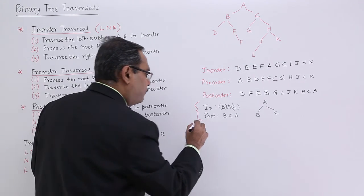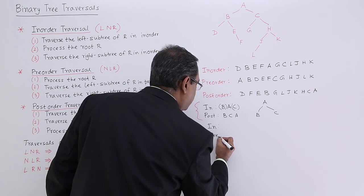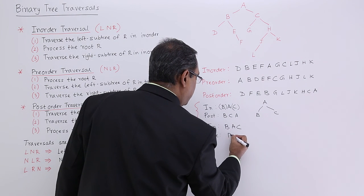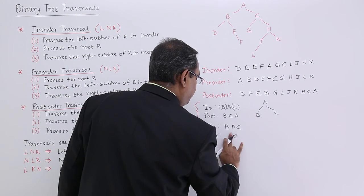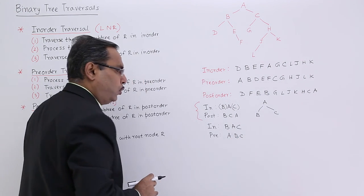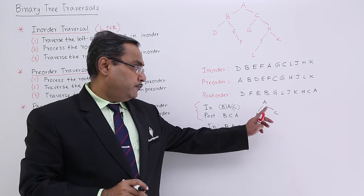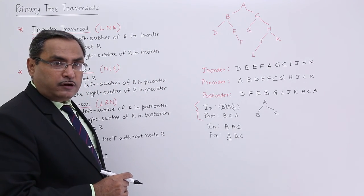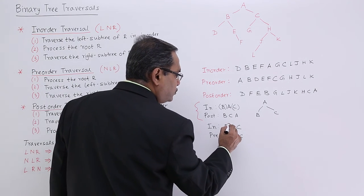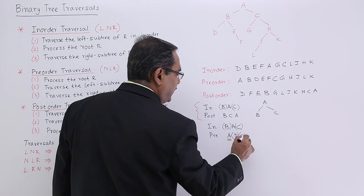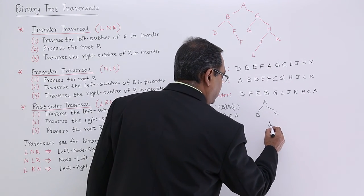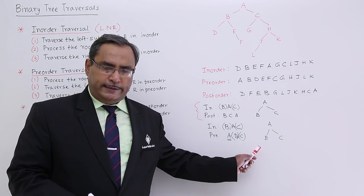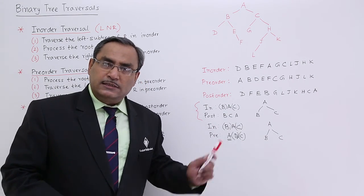Similarly, given inorder traversal and preorder traversal: from preorder it is obvious that the root comes first, so A is the root. In the inorder traversal, everything before A is the left subtree and everything after is the right subtree. So B goes to the left subtree and C to the right subtree. In this way, I can form the tree uniquely and distinctly from inorder and preorder traversals.